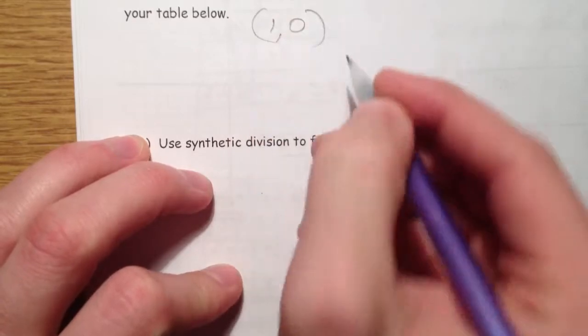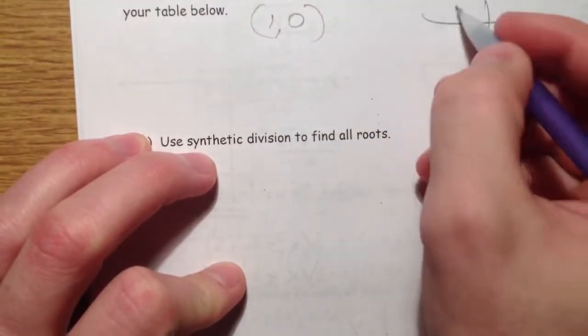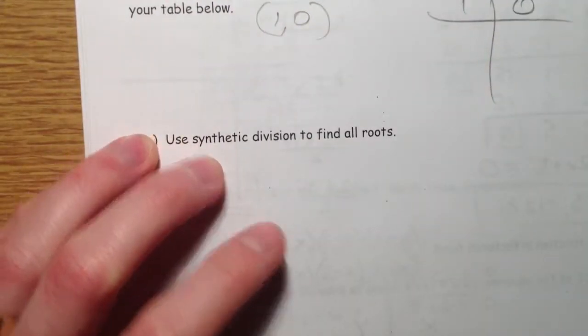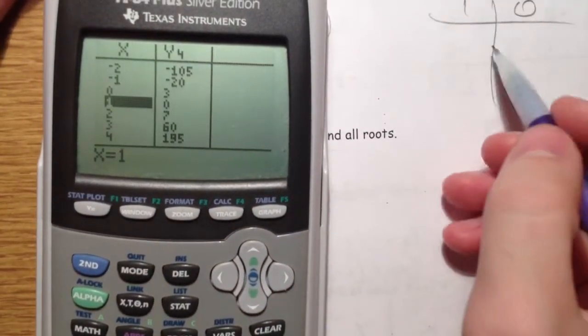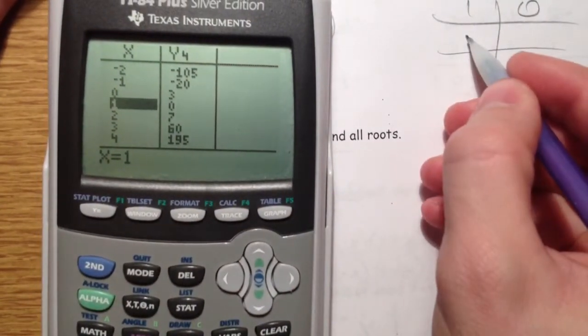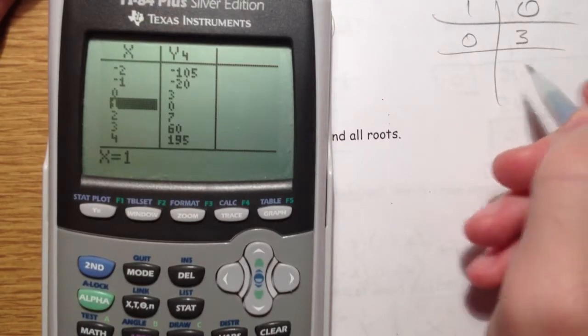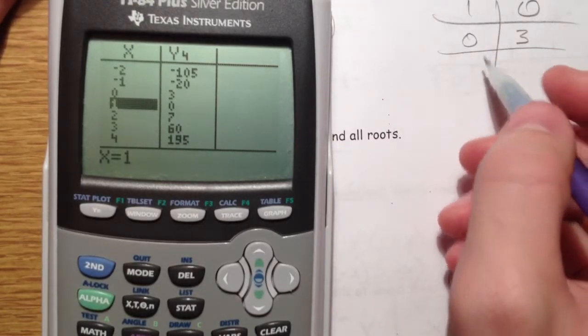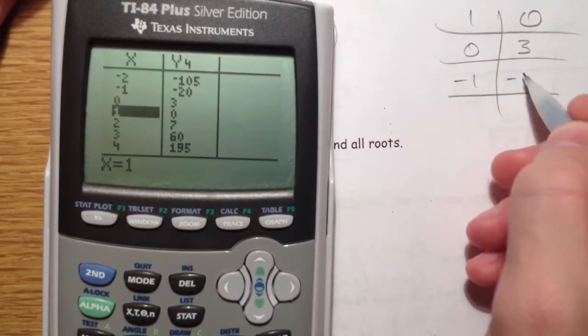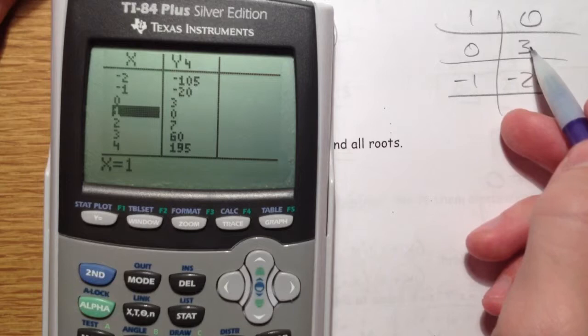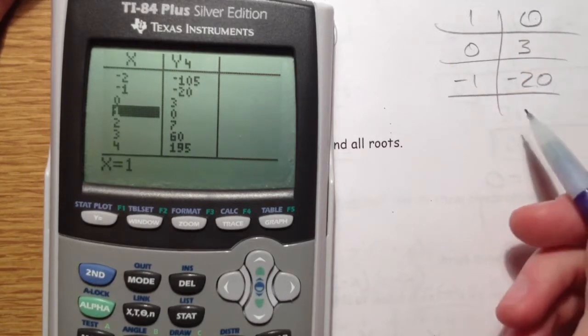So 1, 0. And you also know that 0, 3. Negative 1, negative 20. And so it's crossing from positive to 0 to negative again.